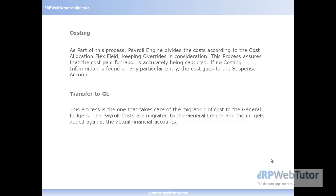The last step is the transfer to GL. This is the last process that the payroll person would be doing. This takes care of the migration of the cost to the general ledger — the payroll costs are migrated to the general ledger and then get added against the actual financial accounts. The finance department maintains those accounts. In one of the payroll setups, in the flex field mapping, you need to specify what is the ledger that you're going to use — that's how it knows the ledger, and it also has direct mapping with the GL segments that are mapped to the cost allocation segments. That's how it knows to which account to pass the costs.